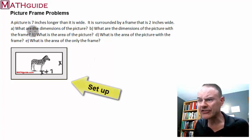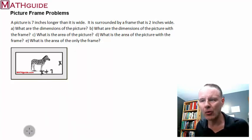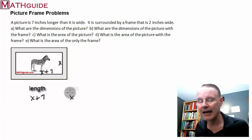Part A asks, what are the dimensions of the picture? So the dimensions, that means what is the length, what is the width? Well, I already know that the length is x plus seven, and I know the width is x. That's it.